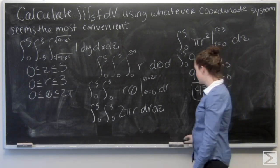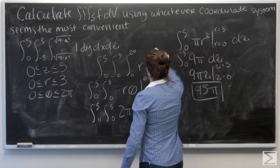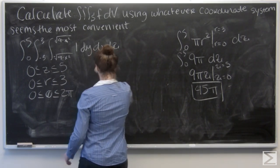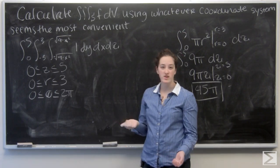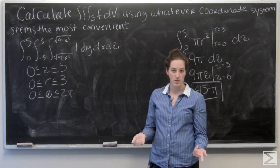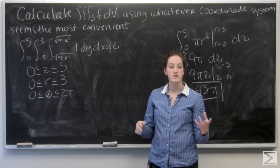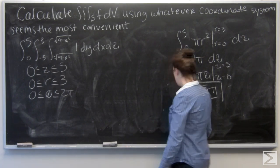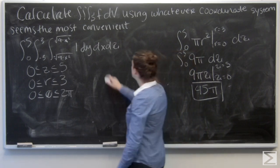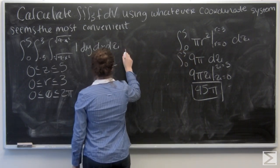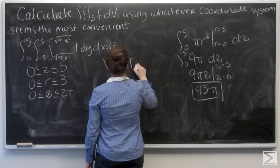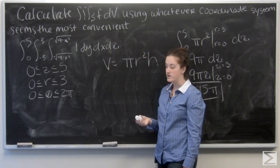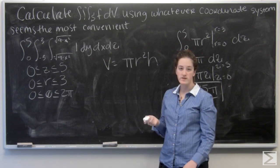And we have a way to check this. Since I have a cylinder, and I'm just integrating one, so pretty much I'm just finding the volume, I can use the equation we know for a volume of a cylinder from eighth grade geometry to check our answer. So v equals pi r squared h. So we know z goes from zero to five, so the height of our cylinder is going to be five.